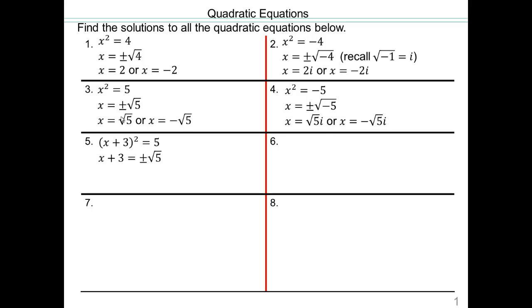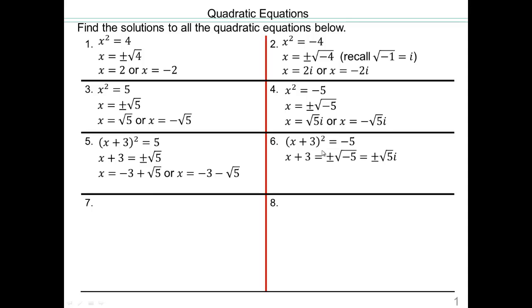Same thing here, except here we have to get rid of that plus 3, so subtract 3 from both sides. That means x equals negative 3 plus square root 5, or negative 3 minus square root 5. The negative 3 came from subtracting the 3. Similarly, x plus 3 equals plus or minus square root of negative 5, which is plus or minus square root 5 i. Subtract 3 from both sides and there are your answers.